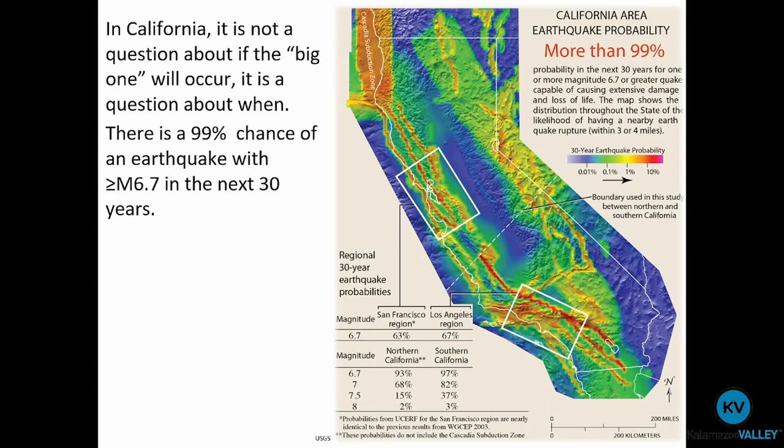Southern California is also on the wait list for a 'big one.' There is a 99% probability of an earthquake with a magnitude equal to or greater than 6.7 occurring in the next 30 years, with San Francisco and Los Angeles being most at risk. Recalling the magnitude scale, 6.7 is expected to produce extensive damage and possible loss of life.